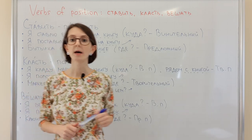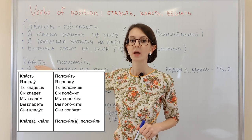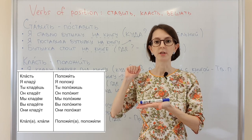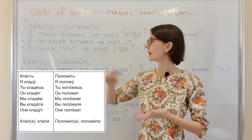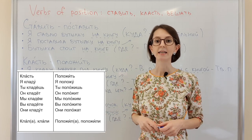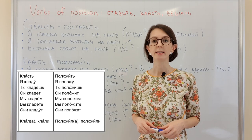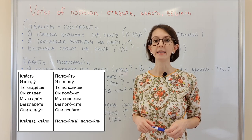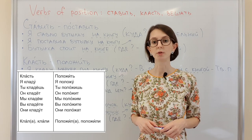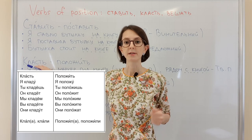Let's have a look at our next verb — класть. Класть means to put in a horizontal position. Let's conjugate it: я кладу, ты кладёшь, он кладёт, мы кладём, вы кладёте, они кладут. This is an NSV verb — imperfective.